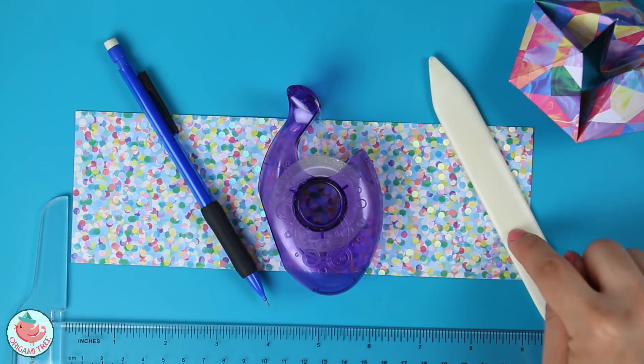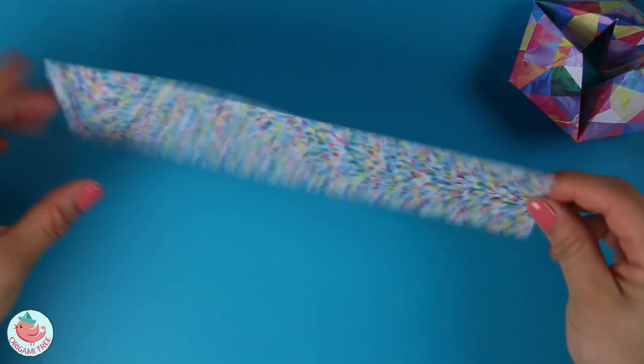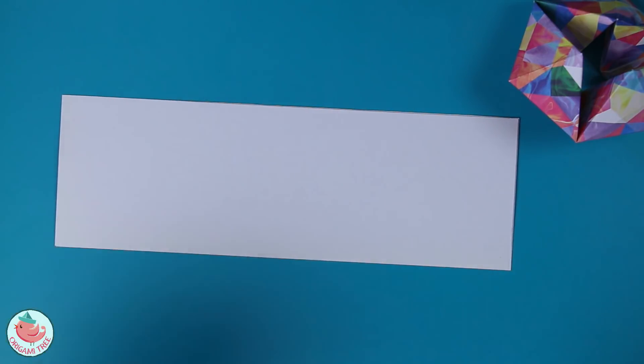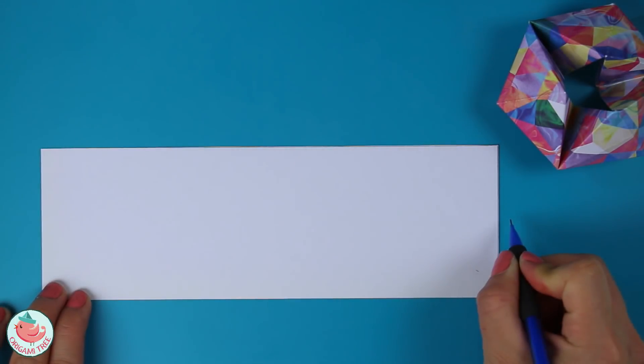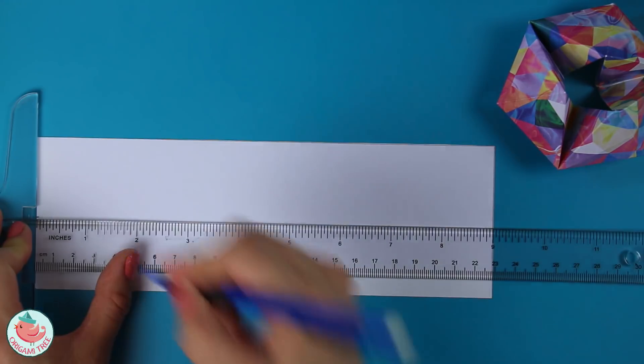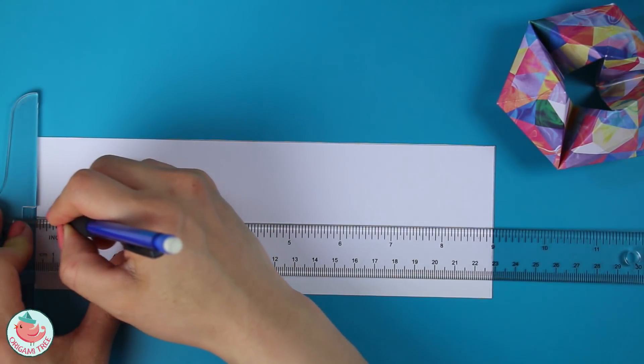The first step is to take your long sheet of paper and flip it around so that the pattern side is facing down towards the table away from you. Now divide your sheet of paper in half lengthwise. So I am just marking off one and a half inches. And with my t-square I'm drawing a line straight across.